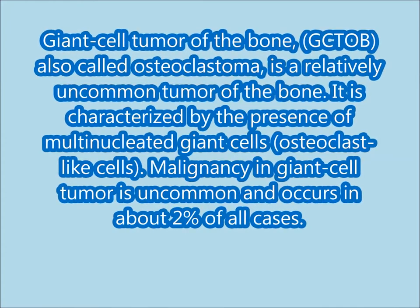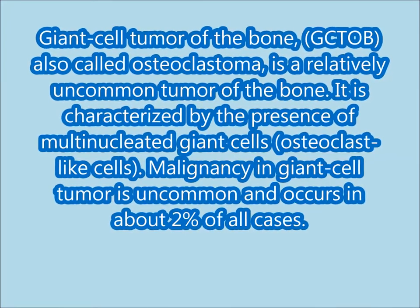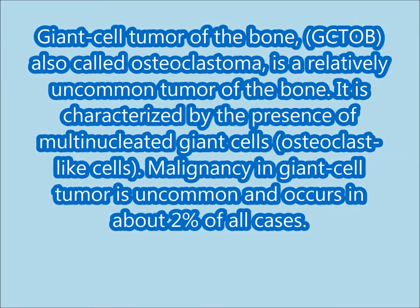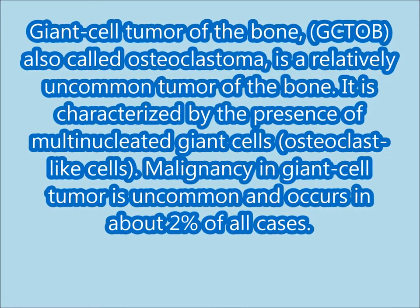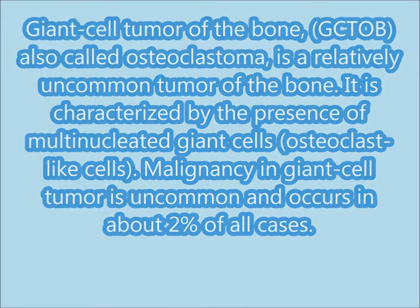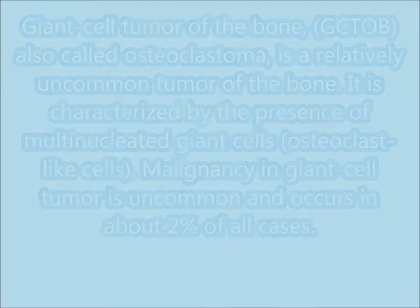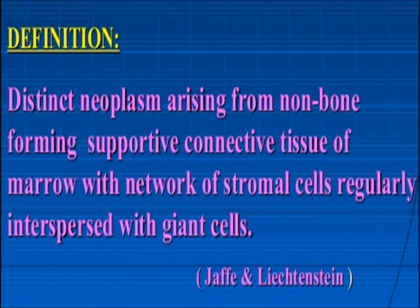It is characterized by the presence of multi-nucleated giant cells, osteoclast-like cells. Malignancy in giant cell tumor is uncommon and occurs in about 2% of cases. By definition, it is a distinct neoplasm arising from non-bone-forming supportive connective tissue of marrow, with a network of stromal cells regularly interposed with giant cells.